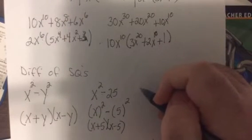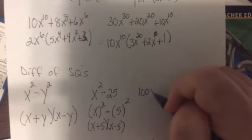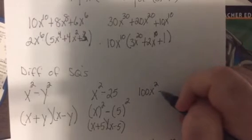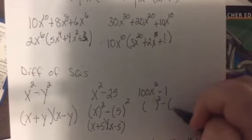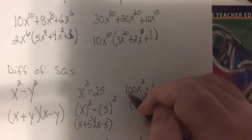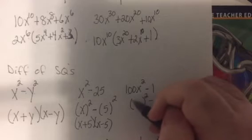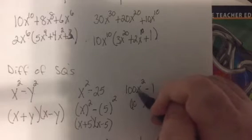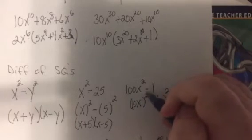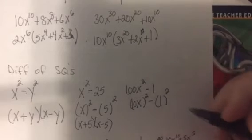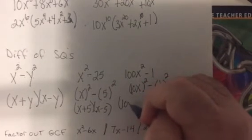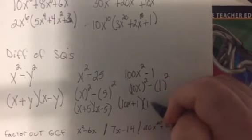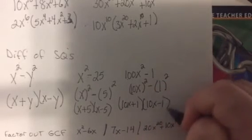Let's say we have 100x squared minus 1. Well what do I square to get 100x squared? With 100 is 10 squared, and then x squared is x squared, and 1 is any power you want. So it'd be 10x plus 1, 10x minus 1.